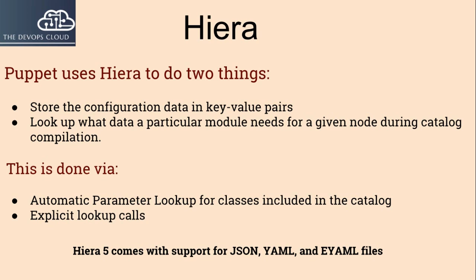Puppet uses Hiera to do two things: store the configuration data in key-value pairs, and look up what data a particular module needs for a given node during catalog compilation. This is done via automatic parameter lookup for classes included in the catalog, and explicit lookup calls.